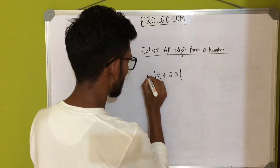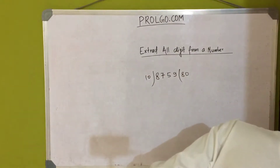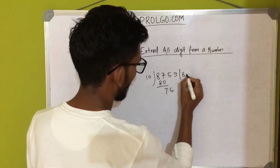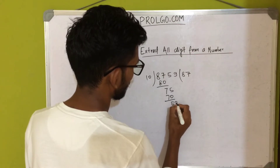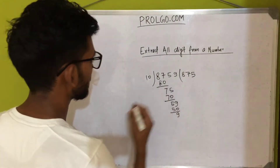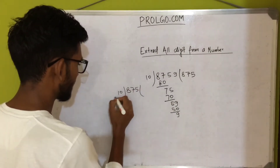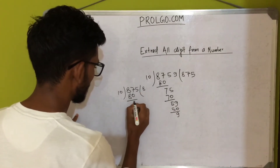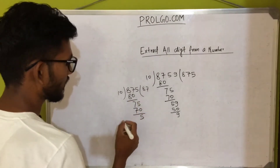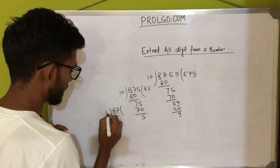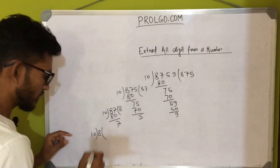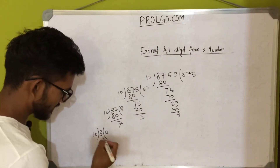I will divide this number by 10. So 8759 divided by 10 gives 875 with remainder 9. Then 875 divided by 10 gives 87 with remainder 5. Then 87 divided by 10 gives 8 with remainder 7. Since 8 is already smaller than 10, we put 0 as the quotient and get remainder 8.